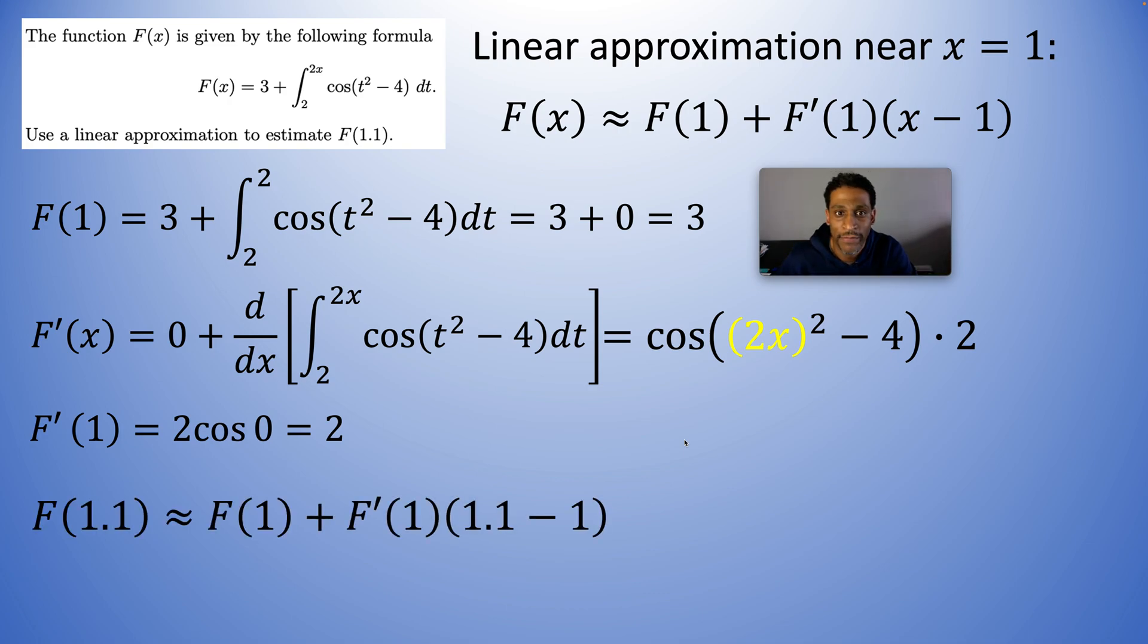Let's just plug them in. We have 3 plus 2 times the quantity of x minus 1. But we're going to use the tangent line to evaluate the function. We're going to plug 1.1 in to the tangent line.